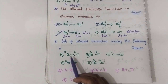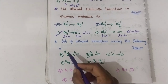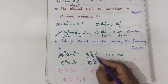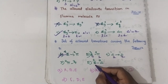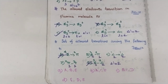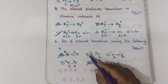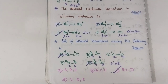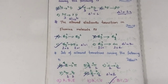For the final question asking for a set of allowed transitions: first eliminate the option with different spin multiplicity. For the remaining transitions, apply Laporte selection rule. One option has ΔL=2, so eliminate it. The remaining three transitions all satisfy both spin selection (ΔS=0) and Laporte selection (ΔL=0 or ±1). So options B, C, and D form the correct set of allowed transitions.